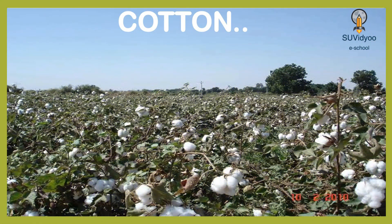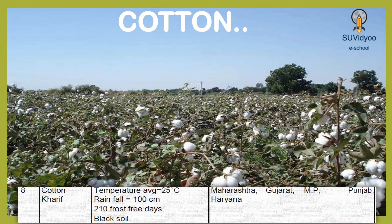Cotton is a fiber crop. It grows in the Kharif season. It requires an average temperature of 25 degrees Celsius and rainfall of about 100 cm. It requires 210 frost-free days and grows well on black soil. Cotton is grown in India mainly in Maharashtra, Gujarat, MP, Punjab and Haryana.